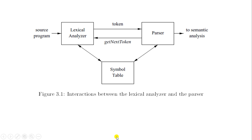This is the actual interaction between the lexical analyzer and the parser. Your source program goes to the lexical analyzer, which generates tokens. These tokens are given to the parser. From the parser you also get new tokens — if more tokens are needed, the parser asks the lexical analyzer for more. The lexical analyzer also interacts with the symbol table, and from the parser it goes to the semantic analysis phase.